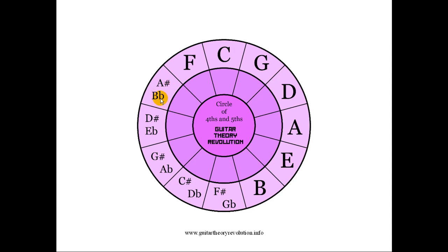So we're going to forget about the sharps and concentrate on the flats. Look what we get: B flat, E flat, A flat, D flat — it's the same, BEAD but in flats. And then you get G flat. So you get BEAD, get close friends, B flat, E flat, A flat, D flat, G flat. You can see that's a really easy way to remember the circle of fourths and fifths.